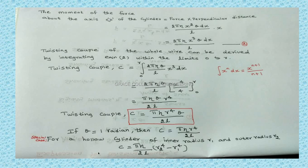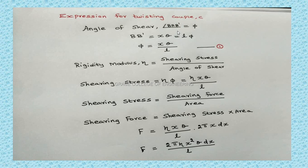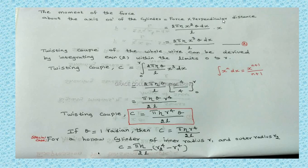Now we have to find the moment of the force. Moment of the force formula is force into perpendicular distance. The force is 2 pi eta x squared theta dx by L and the perpendicular distance is x. So the moment becomes 2 pi eta x cubed theta dx by L.